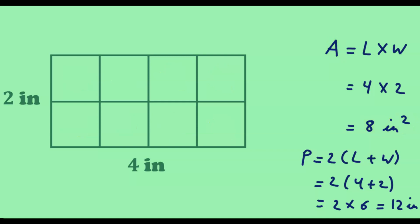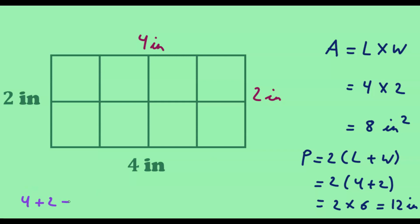Now let us see why the perimeter formula works. The length is 4 inches, so the opposite side is also 4 inches. The width is 2 inches, so the opposite side is also 2 inches. Adding all four sides: 4 plus 2 plus 4 plus 2 equals 12, so the perimeter is 12 inches — confirming that the formula works.